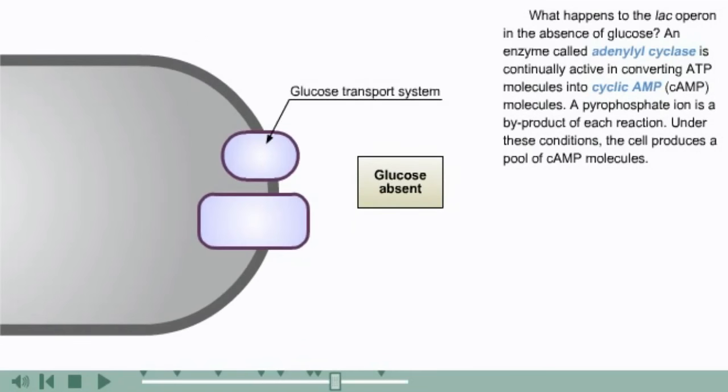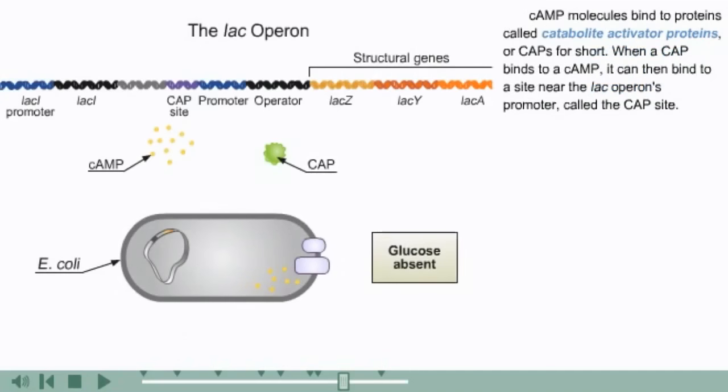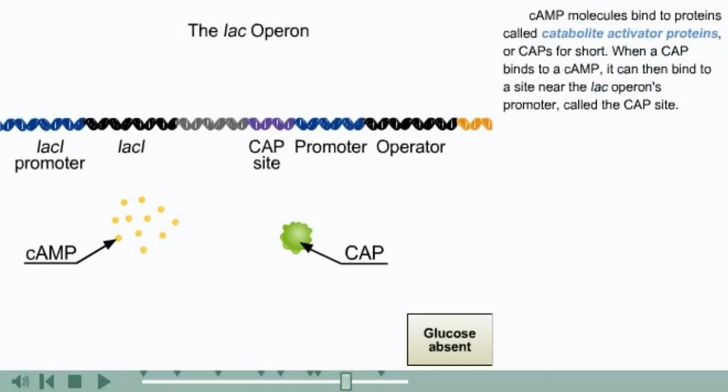What happens to the lac operon in the absence of glucose? An enzyme called adenylyl cyclase is continually active in converting ATP molecules into cyclic AMP molecules. A pyrophosphate ion is a byproduct of each reaction. Under these conditions, the cell produces a pool of cyclic AMP molecules. Cyclic AMP molecules bind to proteins called catabolite activator proteins, or CAPs for short. When a CAP binds to a cyclic AMP, it can then bind to a site near the lac operon's promoter called the CAP site.